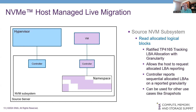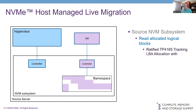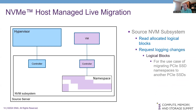TP4165 is not included in the host-managed live migration proposal specifically because it can be used for other use cases like snapshots — if you're taking a snapshot of a namespace, it's useful to read only the allocated logical blocks rather than copying the whole namespace. Once you have the static view, you have to deal with dynamic changes to the logical blocks. For example, with a direct-attached PCIe SSD where the VM is live and making changes, we need to log which logical blocks are being changed by the VM as it's running, so those changed LBAs can be copied over — because they've changed after we obtained the initial allocated logical blocks.